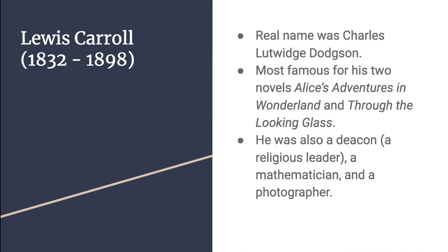This poem, The Jabberwocky, is by a fellow named Lewis Carroll. He was born in 1832 and he died in 1898. He was from England. His real name was Charles Lutwidge Dodson. He is most famous for his two novels, Alice's Adventures in Wonderland and Through the Looking Glass. He also was a deacon, a mathematician, and a photographer. I'm going to go back to a couple of slides, read the whole poem at once, and then we're going to go stanza by stanza so I can point things out as we go.